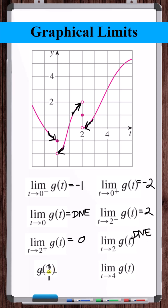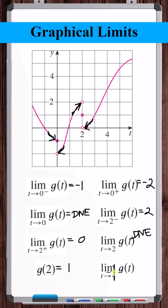The function evaluated at 2, g of 2, is defined to be 1. The limit as t approaches 4 in general — the function is continuous at 4, so this limit is equal to the function evaluated at 4, g of 4, which is 3.